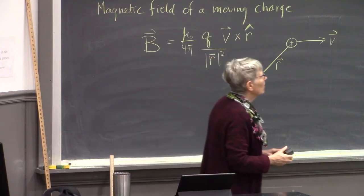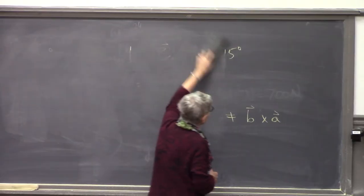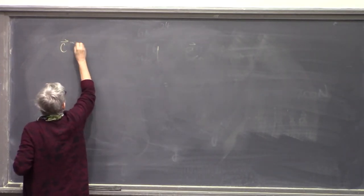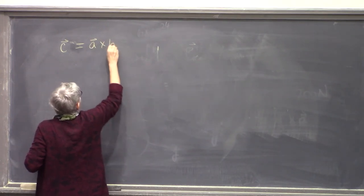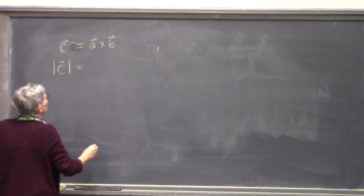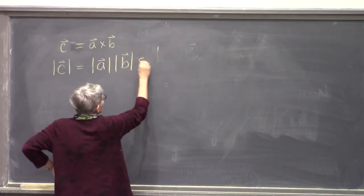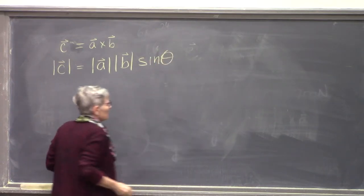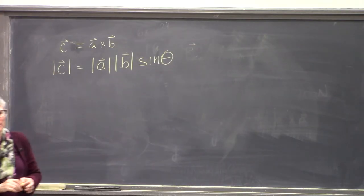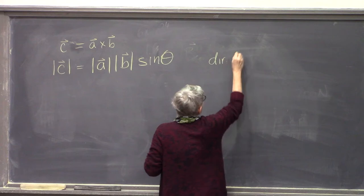Recall also there are two mathematical ways to evaluate a cross product. If C = A × B, then the magnitude of C equals |A||B|sin(θ), where θ is the smaller of the two possible angles between them. Then you get the direction by the right-hand rule.